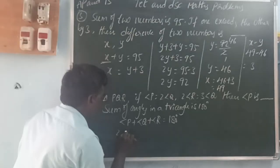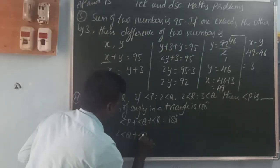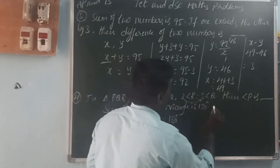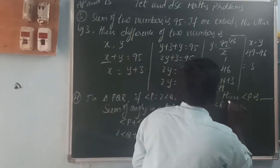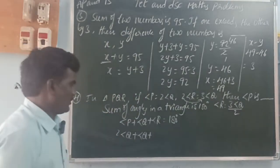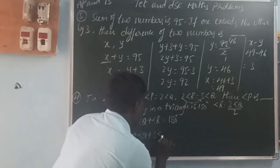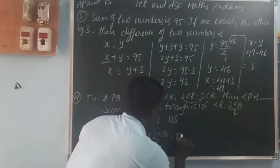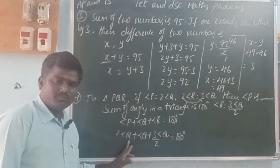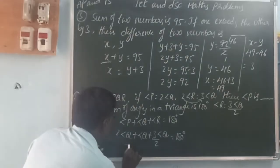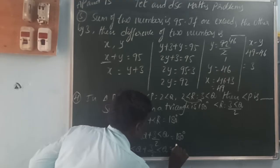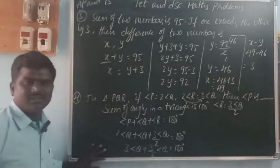Angle P is 2 times angle Q. Angle R equals 3 times angle Q divided by 2. So we have 2Q plus Q plus 3Q divided by 2 equals 180. That becomes 3Q plus 3 by 2 times Q equals 180.